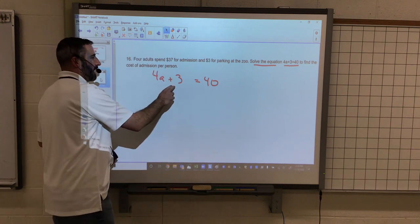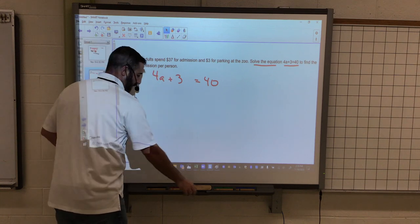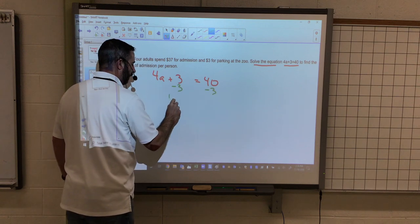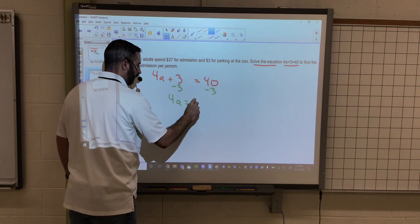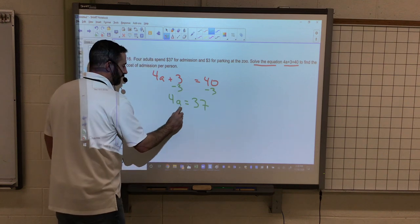And so we have the $3 parking for the zoo. What I'm going to do is solve this equation. So subtract 3. 4A equals 37. Let's divide it by 4.